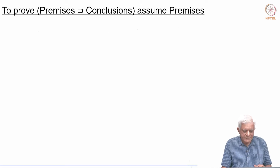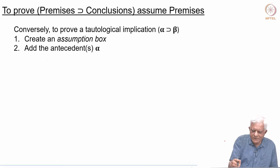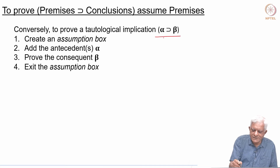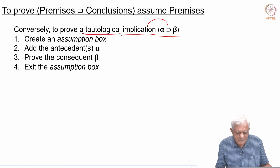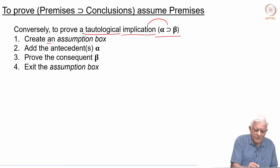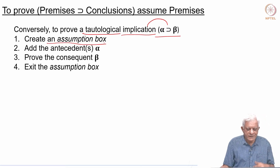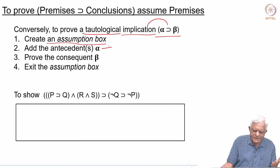Sometimes you want to do the converse: to show that a given formula is a tautological implication. A tautological implication uses the implication symbol and is tautological in that we want to show it is true. To prove that alpha implies beta as a tautological implication, we can create what we call an assumption box, and within that box we will assume that alpha is true, adding alpha to the assumption box and then going about proving beta, and then exiting the assumption box.